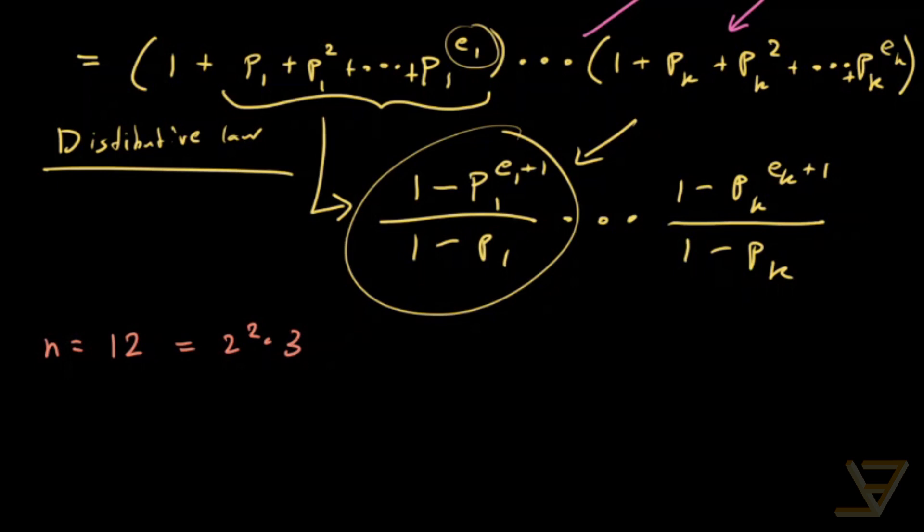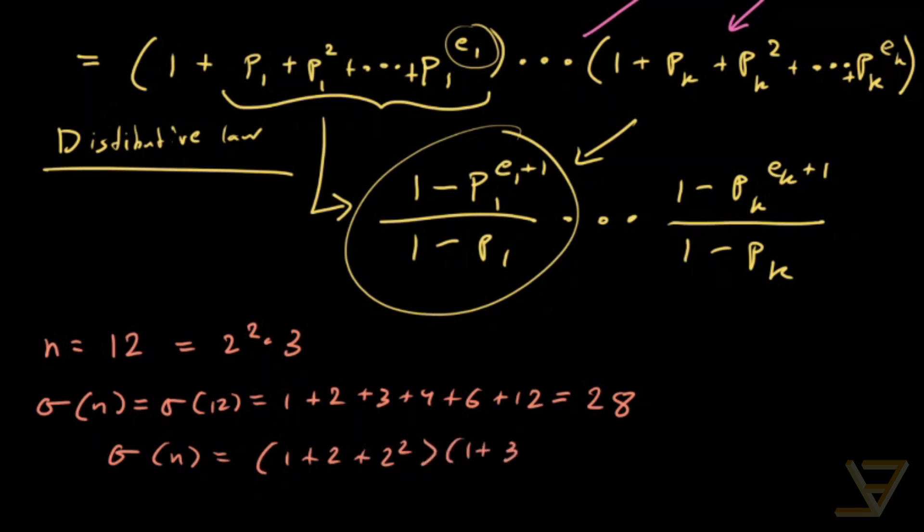Now the divisors, the sum of the divisors is 1 plus 2 plus 3 plus 4 plus 6 plus 12, and that is equal to 28. And if you check, sigma n is equal to 1 plus 2 plus 2 squared times 1 plus 3, which is equal to 7 times 4, and that's also equal to 28.